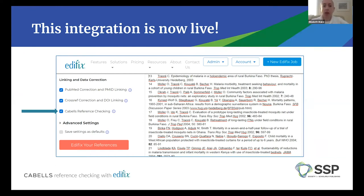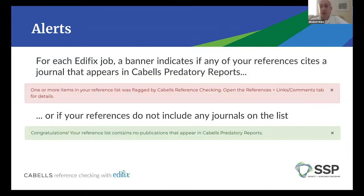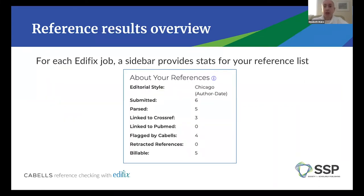I want to talk through what that looks like if you are an Edifix user. The first thing that will happen is you'll get an alert when you run a job — a banner will indicate if any of the references in your list cite a journal that appears in Cabell's predatory reports. It will also let you know if you get the all clear and none of your references include journals on that list. You will also get an overview of your references with stats, including how many were fully processed, how many linked, are any retracted, and have any been flagged by Cabell's.